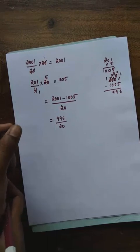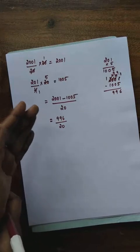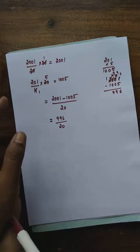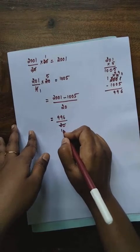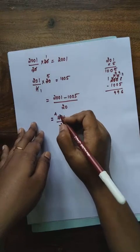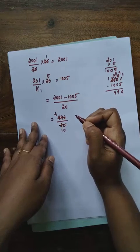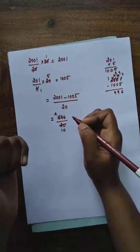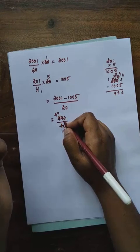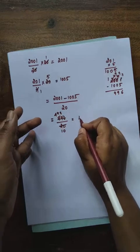First check if we can simplify: both 996 and 20 are even numbers, so we can cancel in the 2 table. Dividing both by 2 gives 498/10. We can simplify further by dividing both by 2 again: 498 ÷ 2 = 249... Working through the division: 498/10. Dividing 498 by 10 gives quotient 49 with remainder 8. So the mixed fraction is 49 and 8/10.